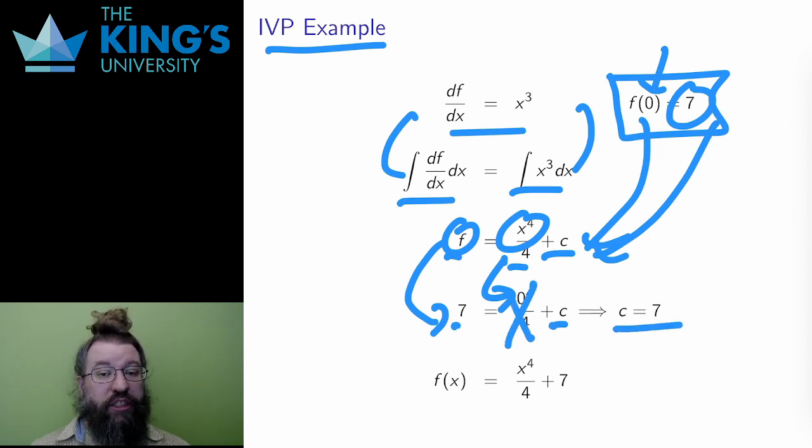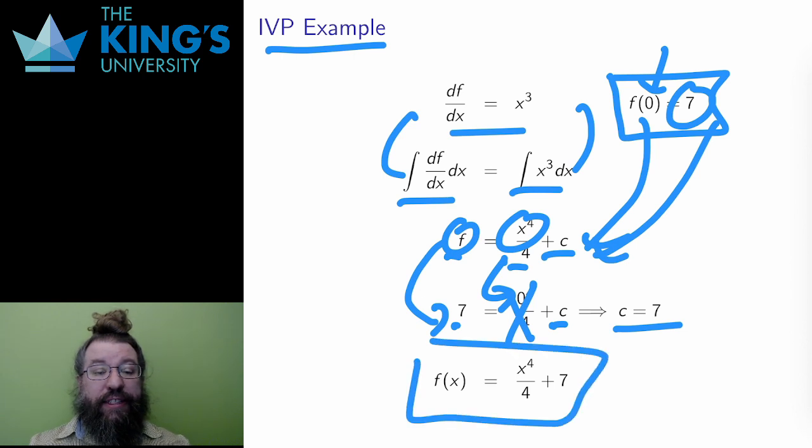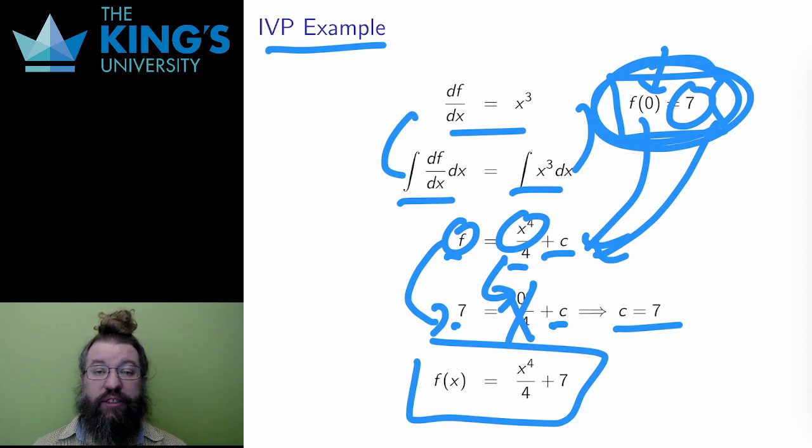So the unique function f, which satisfies the DE and the initial condition, is f of x equals x to the 4 over 4 plus 7. The IVP has been solved, and there are no unknown constants left.